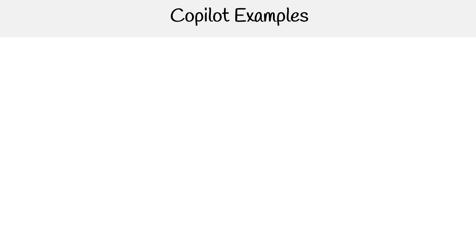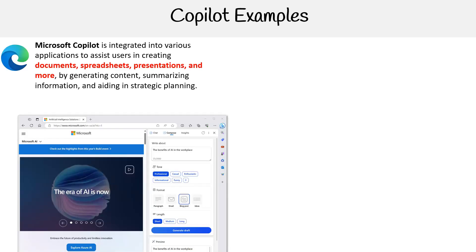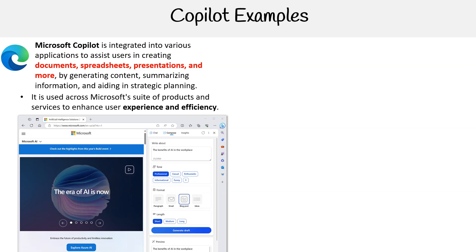Let's take a look at a few examples of copilot, starting with Microsoft Copilot. Microsoft Copilot is integrated into various applications to assist users in creating documents, spreadsheets, presentations, and more by generating content, summarizing information, and aiding in strategic planning. It is used across Microsoft's suite of products and services to enhance user experience and efficiency.